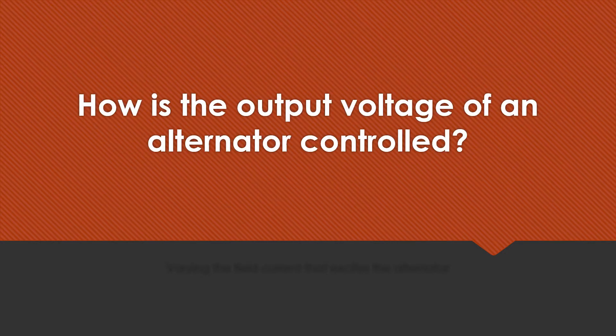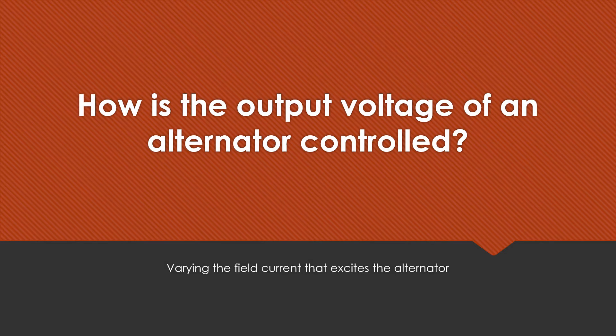How is the output voltage of an alternator controlled? By varying the field current that excites the alternator.